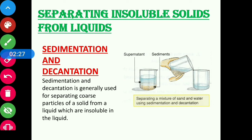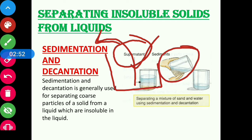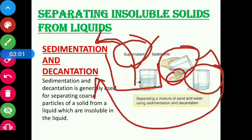We can see the sand settling down at the bottom of the beaker — this whole process of settling down is called sedimentation. After sedimentation, for separation of the water from the sand particles, the supernatant liquid (water) is carefully transferred to another beaker without disturbing the settled sand. The sand remains in the original beaker. This process is called decantation, and the whole process together is called sedimentation and decantation — this is how we separate the mixture of sand and water, where sand is insoluble in water.